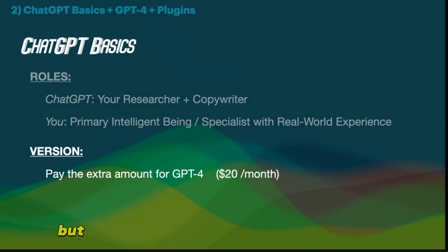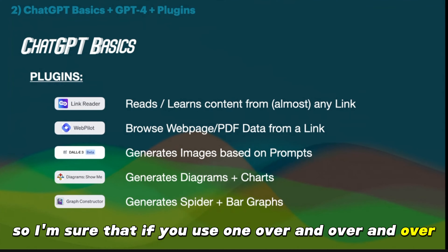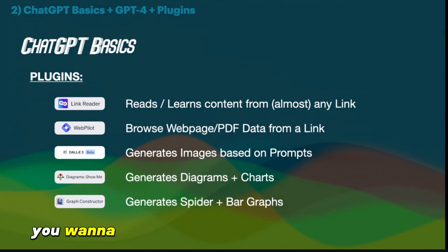People are still joining — welcome everyone that's new. This is being recorded, so whatever you missed you'll get in an email afterwards. A question came in: do you have to pay for each plugin separately? No. In order to use plugins you do have to pay the $20 a month for GPT-4 — they don't work in 3.5. But all the plugins are more or less free. I've never had to pay for one.